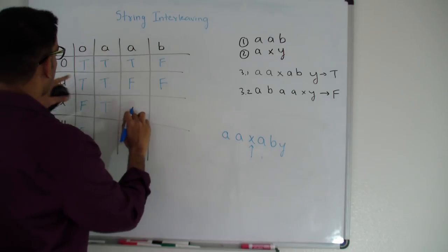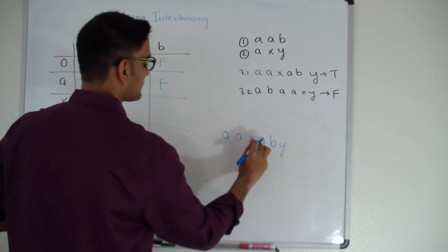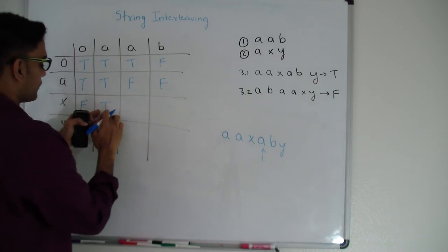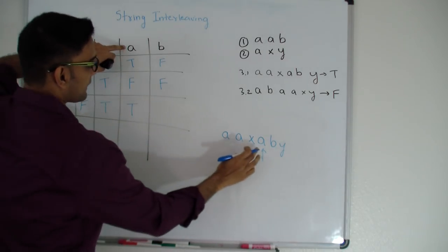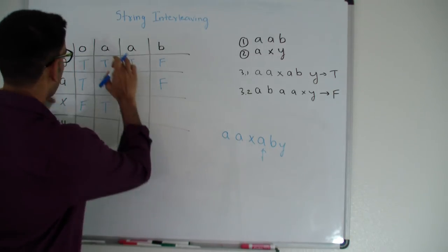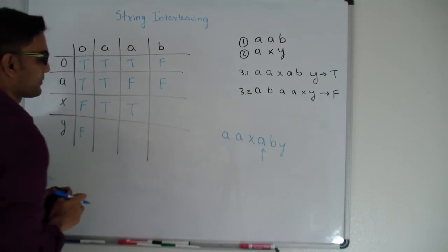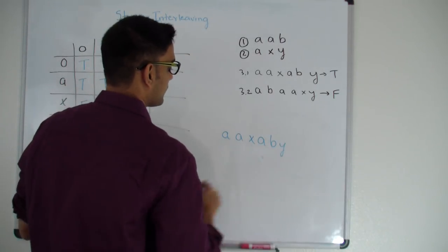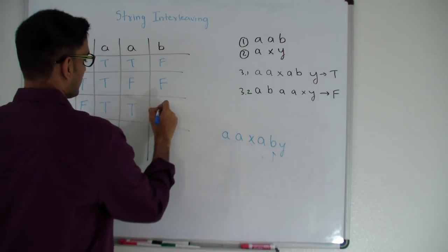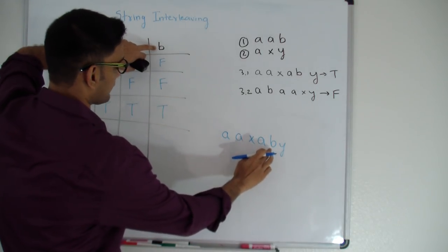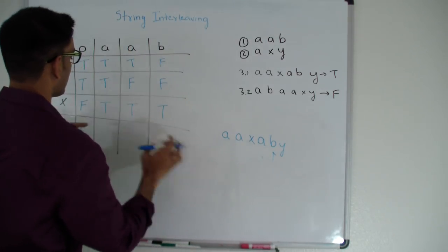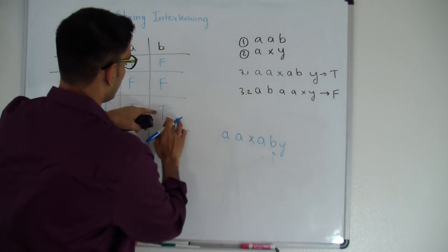Now considering the fourth 'a' with 'a' and 'ax'. Is this 'a' same as either option? It is same as 'a'. Since it matches, I check if the value to the left of me is true. It is true, so this is also true. Basically, since 'aax' was an interleaving of 'aa' and 'ax', adding one more 'a' keeps the interleaving in place. Next, is this 'b' same as this or this? It is same as 'b'. The value to the left is true, so this is true. Removing these two 'b's, we're left with 'aaax', which is an interleaving of 'aa' and 'ax', and adding the 'b' continues the interleaving — which is why this is true.